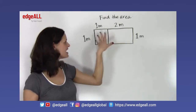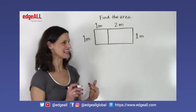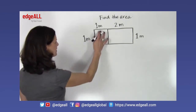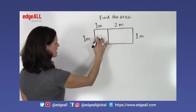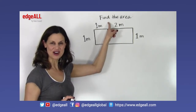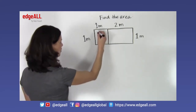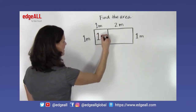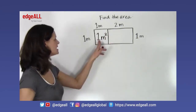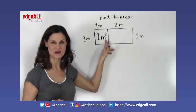We find the area of each smaller shape and then add those two areas together. The small square here is 1 meter by 1 meter, so multiplying 1 times 1 equals 1. The area of this square is 1 square meter.